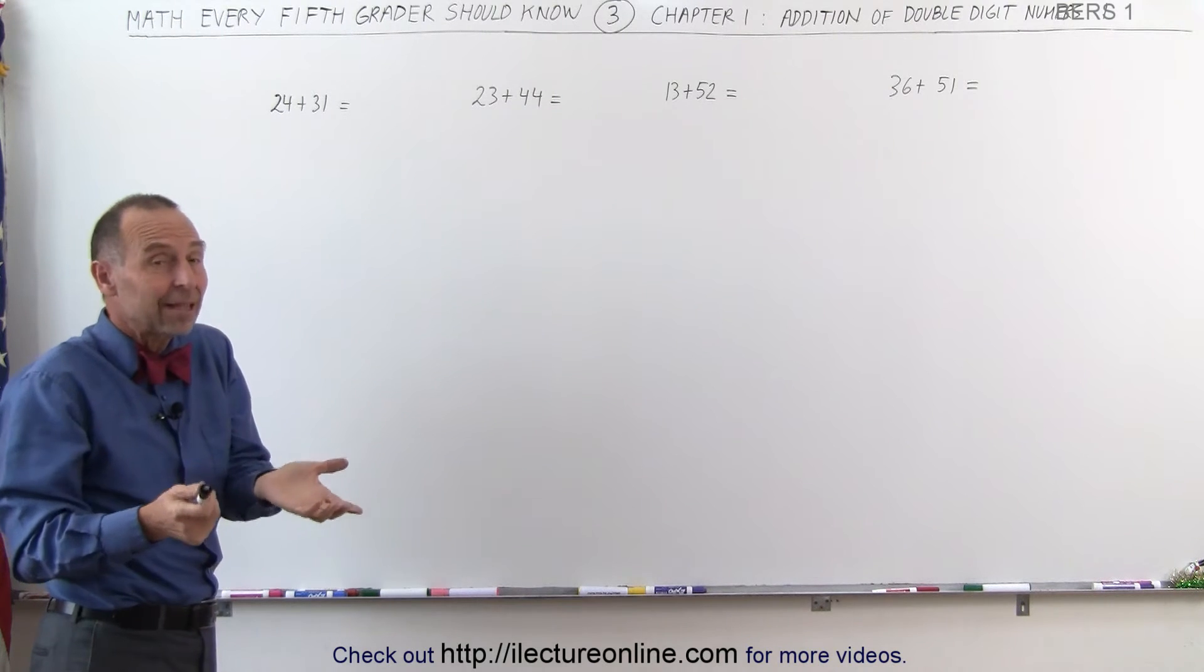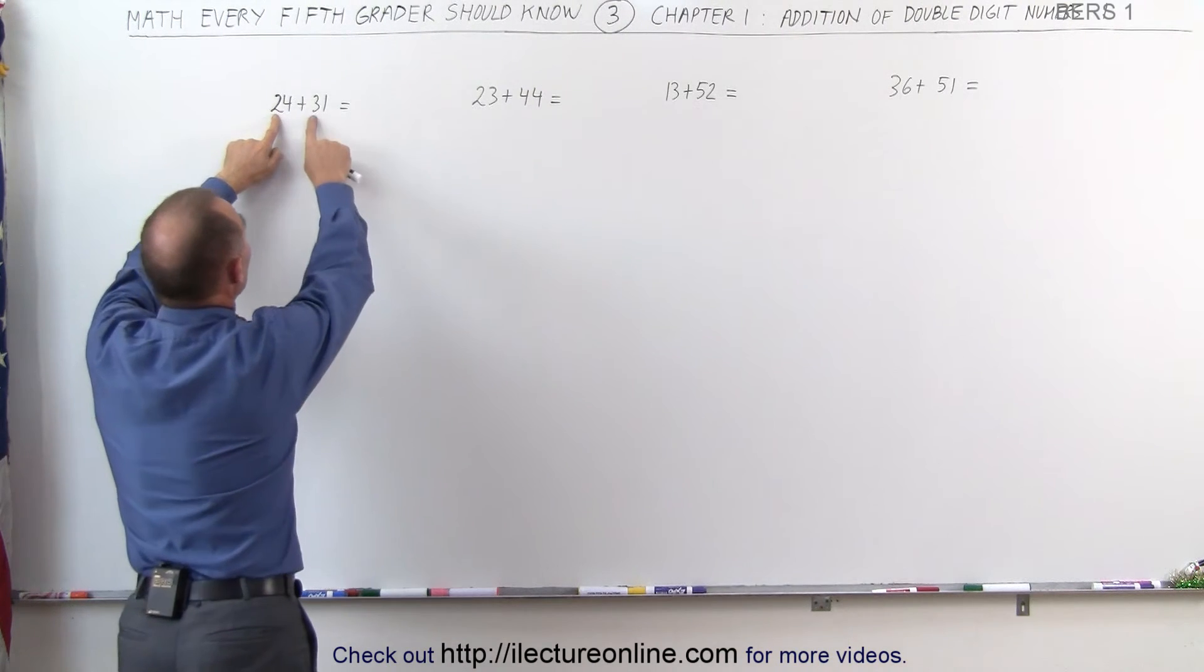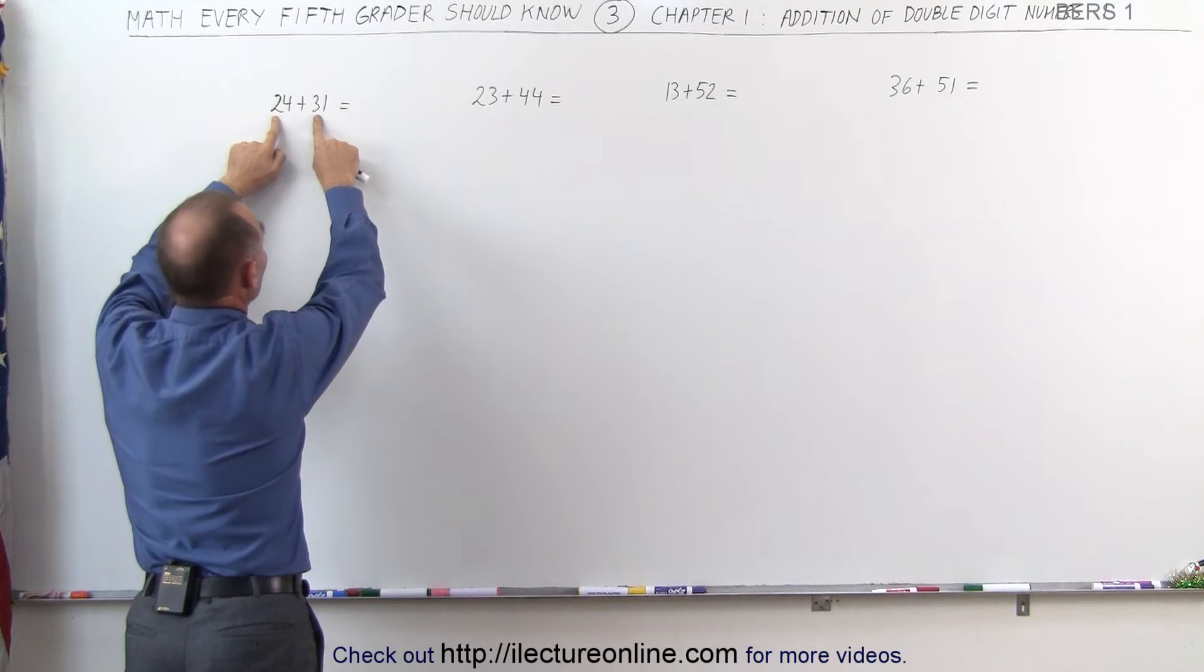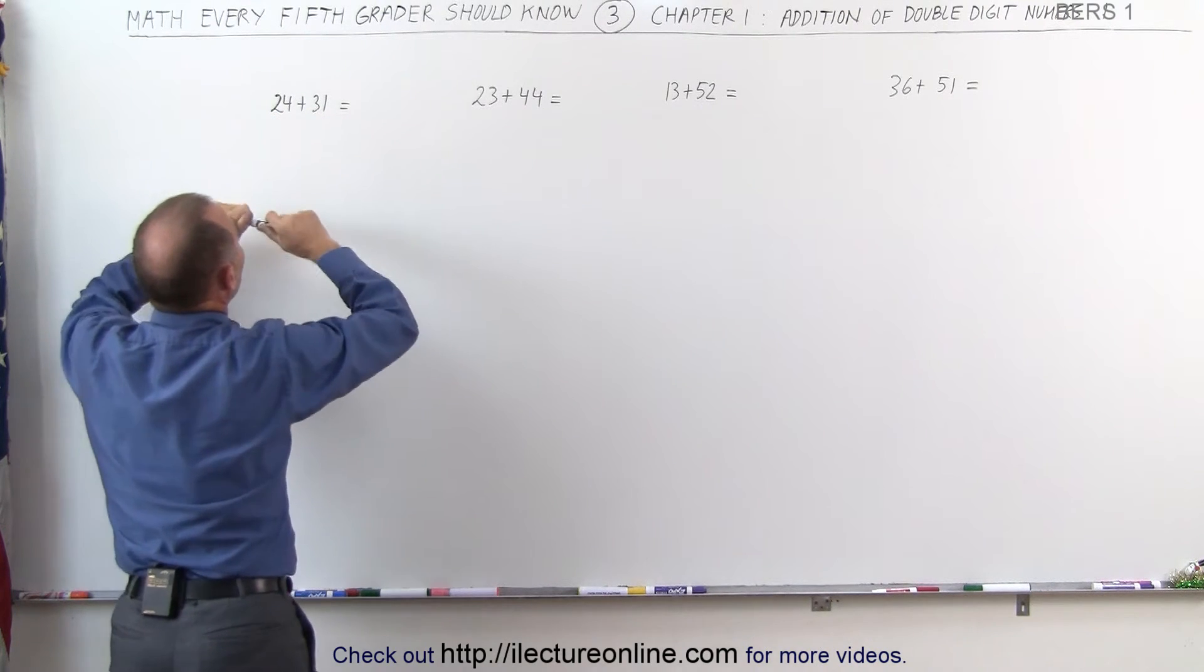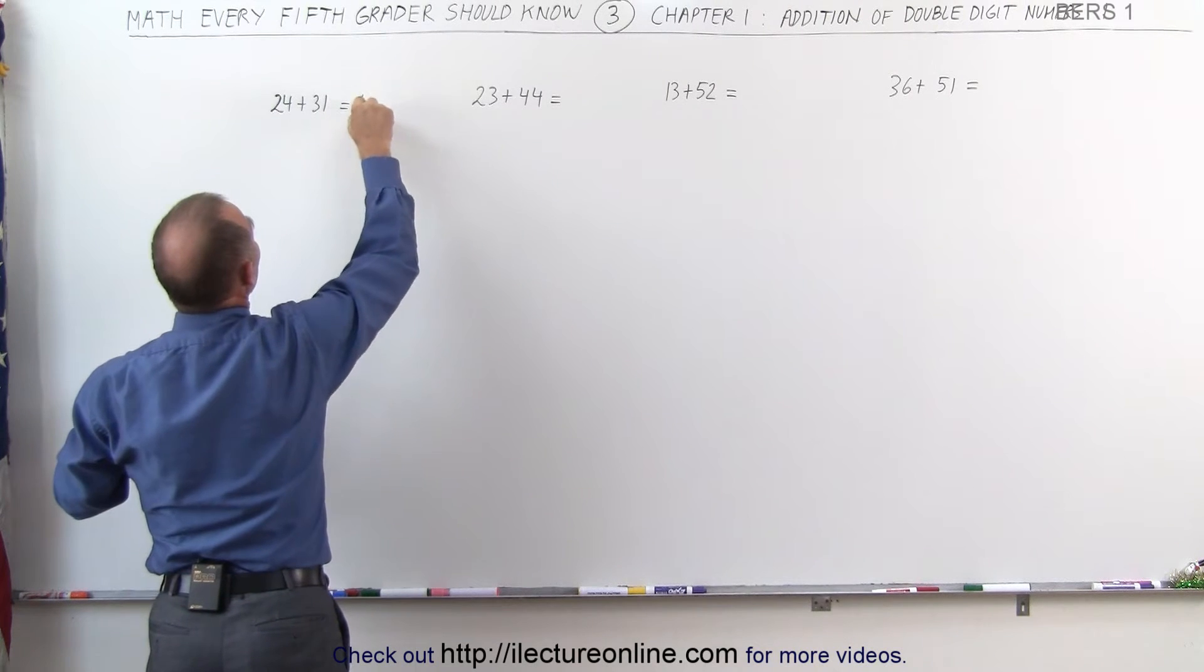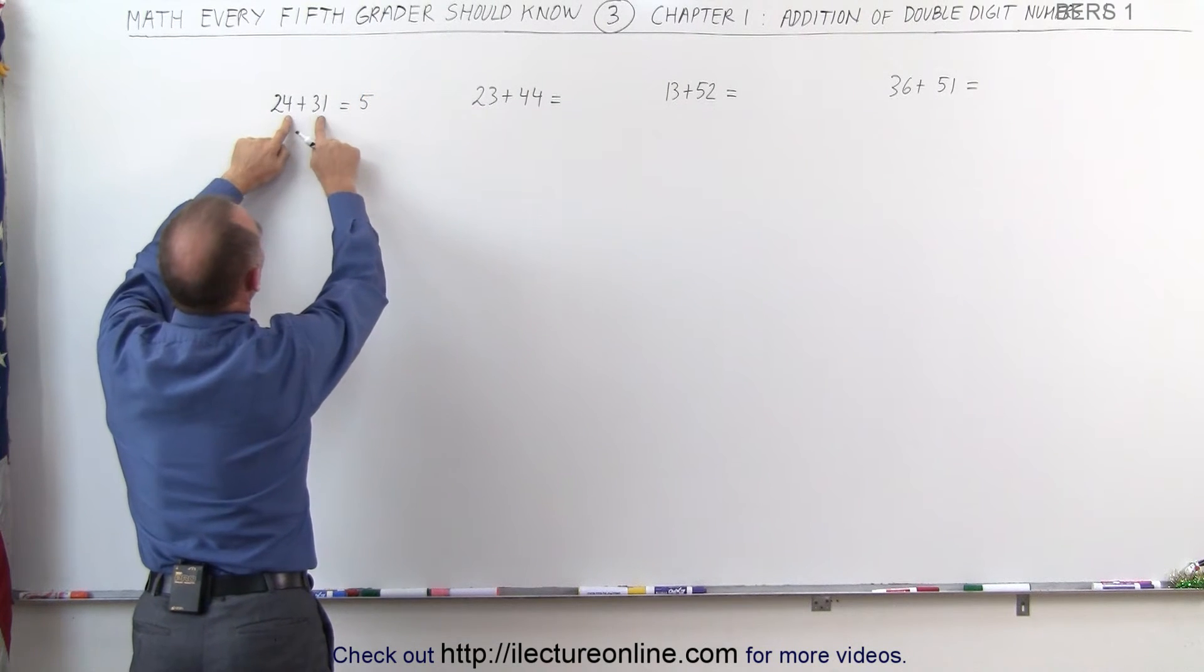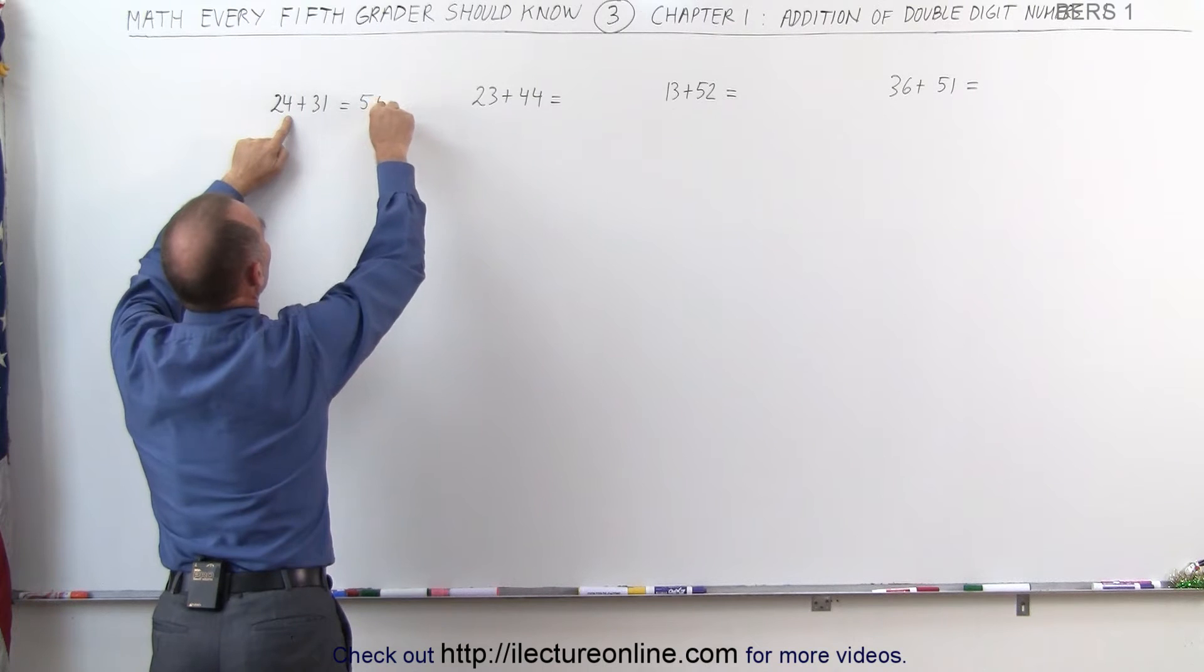When that's the case, that makes it very straightforward. We simply add the first two numbers together, 20 plus 30. What you do is you write, you can say 2 plus 3 is 5, and my first number here becomes a 5. The second number, 4 plus 1, that's 5. The second number becomes 5.